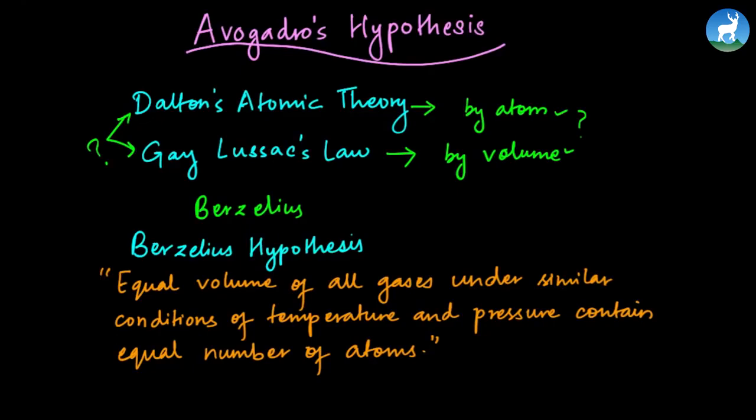This means that temperature and pressure are similar or constant. So if there are gases like hydrogen, oxygen, and nitrogen, then the gases are equal volume. So there are not equal number of atoms.